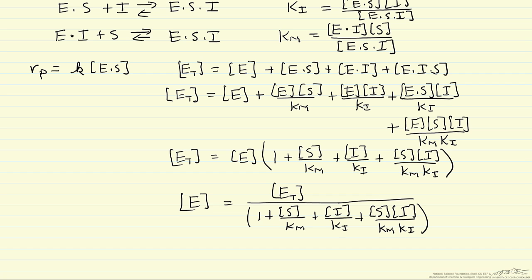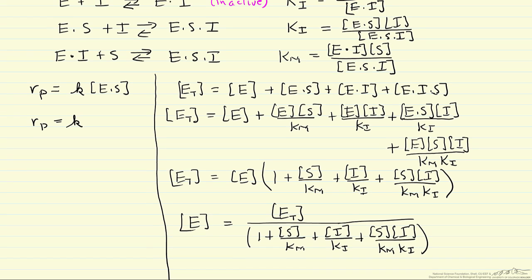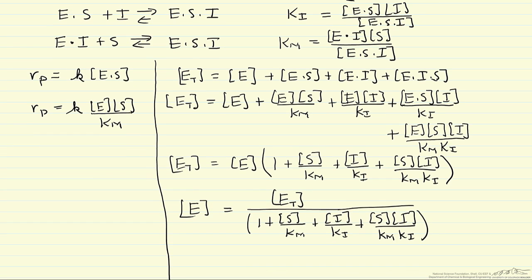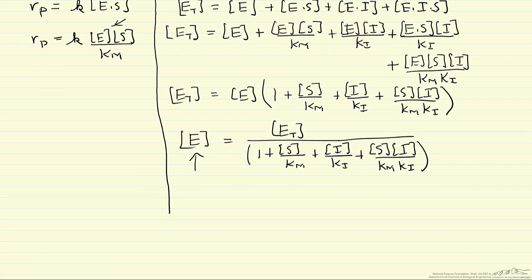Now I'm going to go back and write the rate of product formation as the rate constant for the rate-determining step times the concentration of the enzyme-substrate complex. From the equilibrium expression, the enzyme-substrate complex concentration equals the enzyme concentration times the substrate concentration divided by Km. Substituting this in, I can now substitute the expression for free enzyme concentration to get a final rate expression in terms of the total enzyme concentration ET, the substrate concentration, and Km.